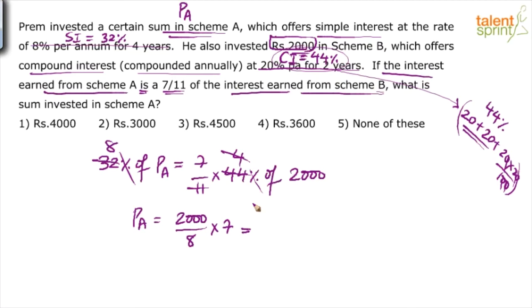Yes sir? 250 into 6 is 1500. Into 7 will be 1500 plus 250, which is 1750. So answer should be option 5. No. 10. 2. 1. 2.